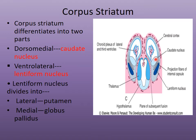The corpus striatum differentiates into two parts: a dorsomedial part, the caudate nucleus, and a ventrolateral part, the lentiform nucleus. The lentiform nucleus later develops into the lateral part — the putamen — and the medial part — the globus pallidus. The ventricles of the cerebral hemispheres are closed by the close approximation of their medial walls, and the choroid plexuses appear in the walls of the lateral and third ventricles.